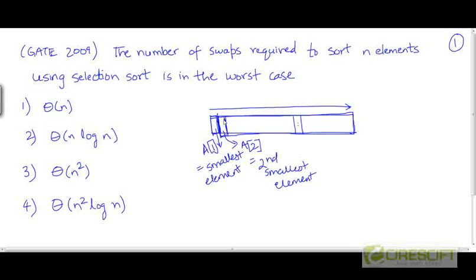We have seen in the explanation of selection sort that there are n-1 iterations in total. So the number of swaps required to sort n elements is going to be n-1, equal to the number of iterations. And of course, n-1 is theta of n. So the correct answer to this question is theta of n.